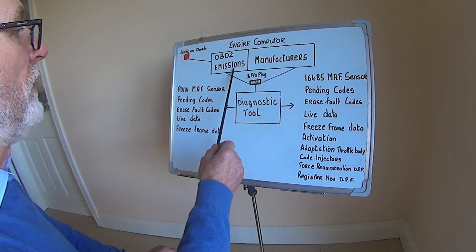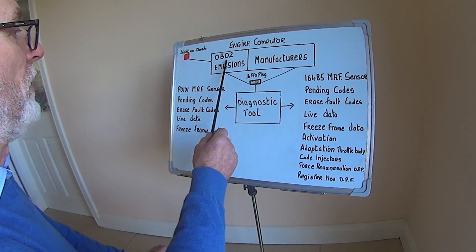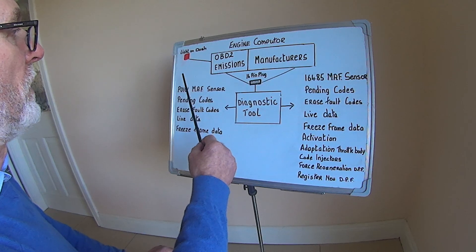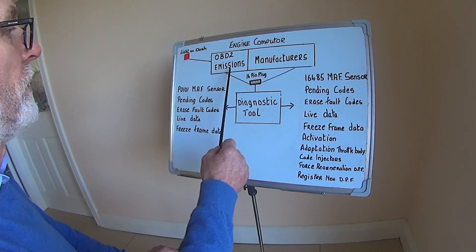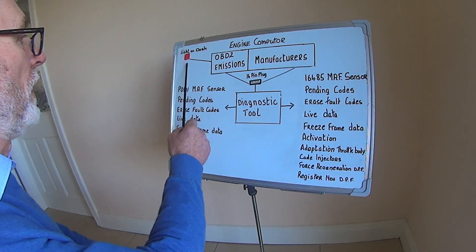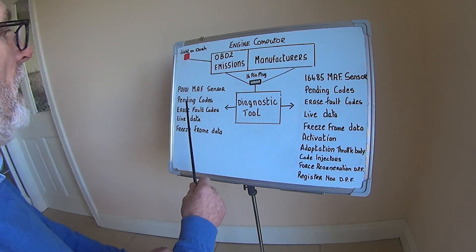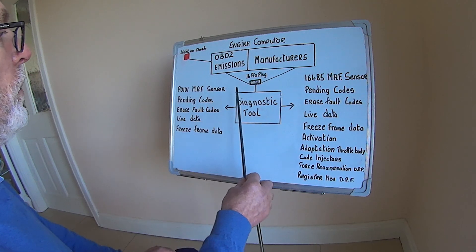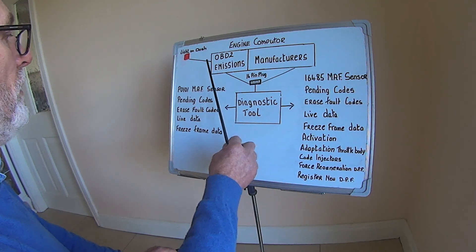Now OBD2 has to do with emissions. It's the job of OBD2 to watch the sensors on the engine, and if there's a fault in the engine, to register a code in the engine computer and turn on the light in the dash. Now this is the information we receive when connecting our diagnostic tool into OBD2.